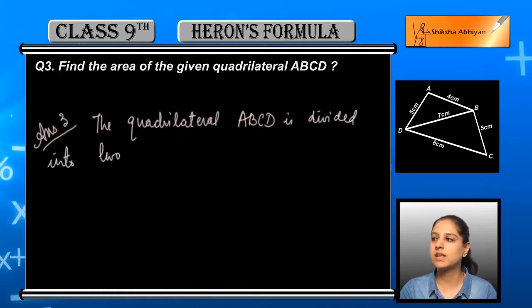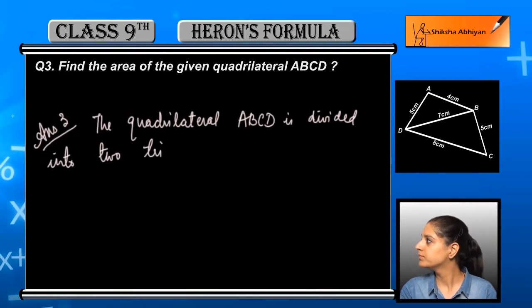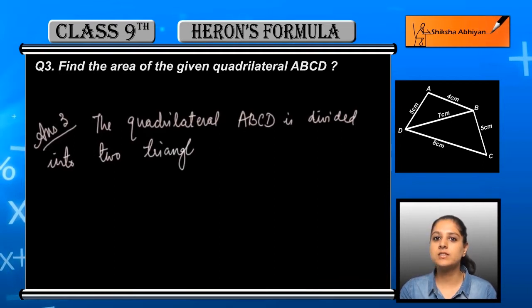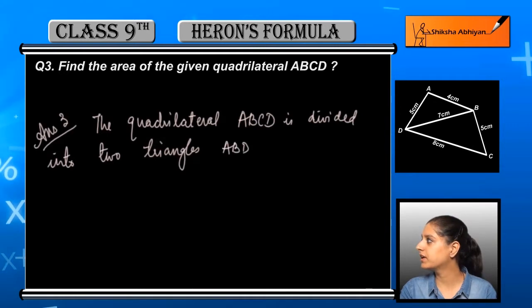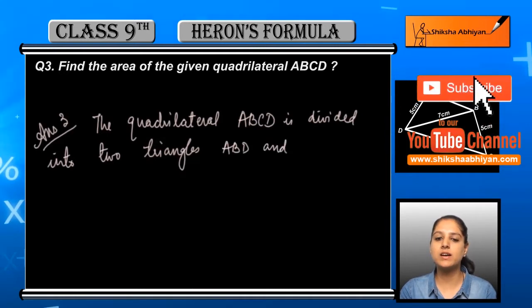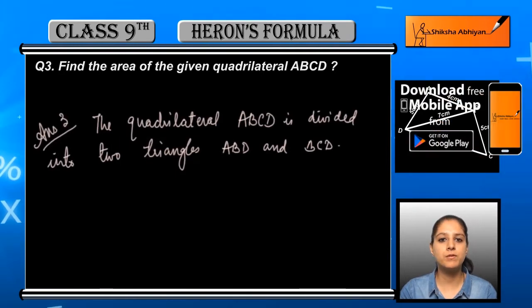The first triangle is ABD and the second triangle is BCD. We will first apply Heron's formula to the first triangle, then to the second, and add both to get the complete quadrilateral area.